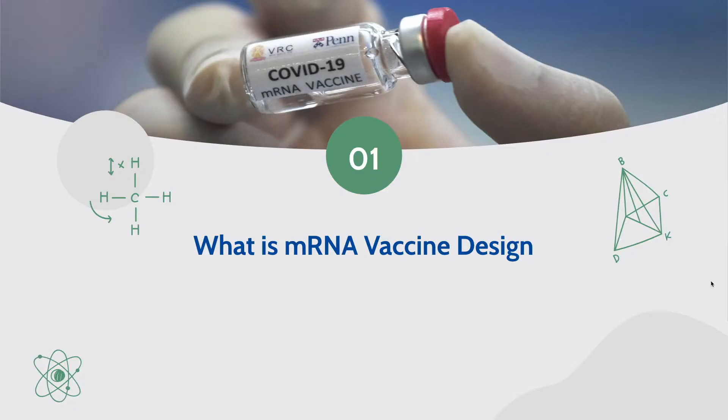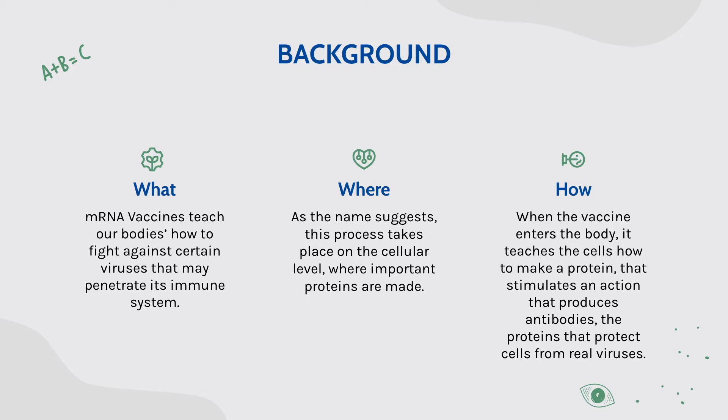What is mRNA vaccine design? mRNA vaccines teach our bodies how to fight against certain viruses that may penetrate its immune system. As the name suggests, this process takes place on the cellular level, where important proteins are made. When the vaccine enters the body, it teaches the cells how to make a protein that stimulates an action that produces antibodies — the proteins that protect cells from real viruses.